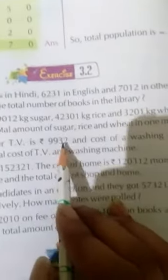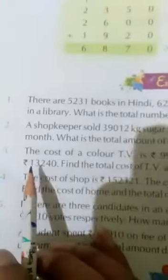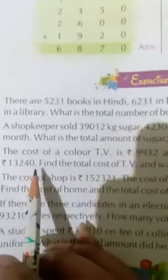Here students, the cost of a color TV, what's the cost? How much is it? 9,932. And cost of washing machine, how much is it? What's the cost of a washing machine? 12,240. Okay?